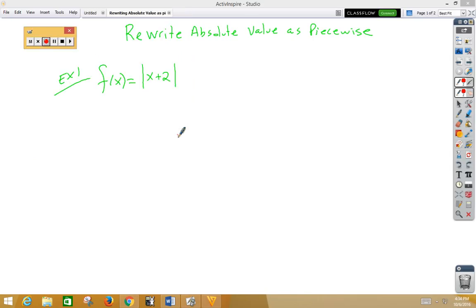In this video, we're going to learn how to rewrite absolute value as piecewise. When we did absolute value in algebra 1, you always wrote it twice: once positively and once negatively. That's the beginning of a piecewise function.